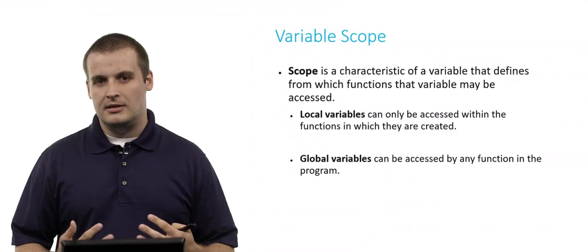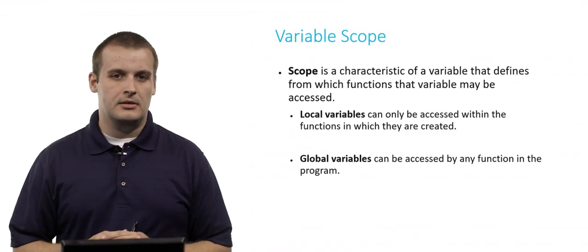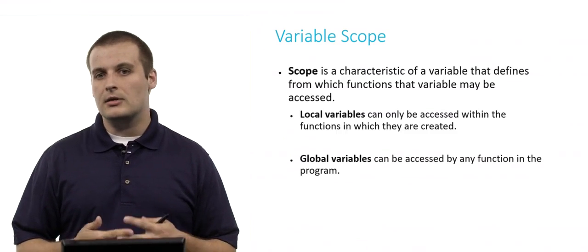Scope is a characteristic of a variable that defines from which functions that variable can be accessed. There are two primary scopes in C: local variables and global variables.